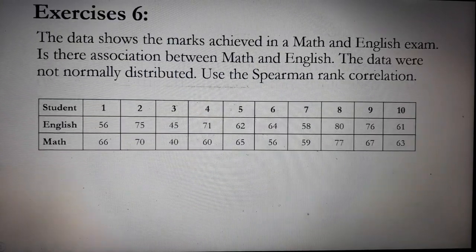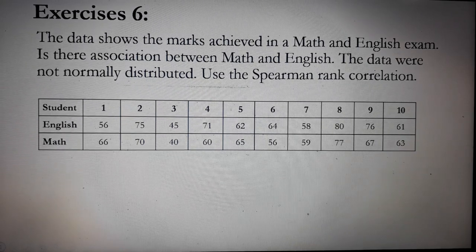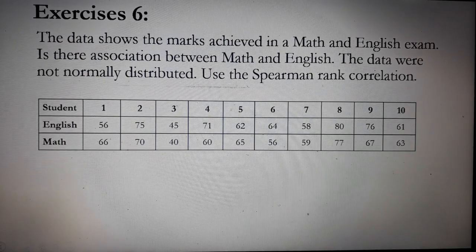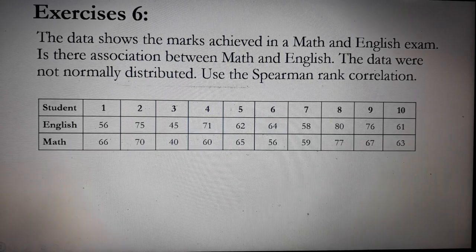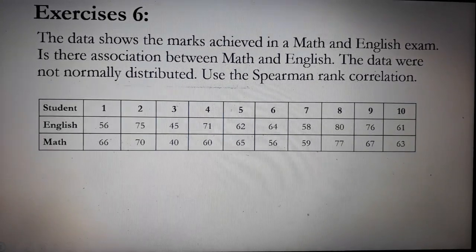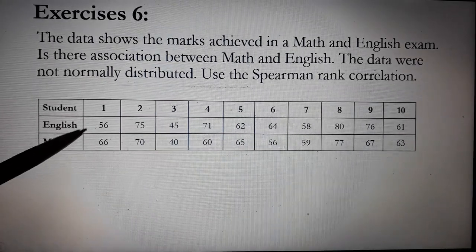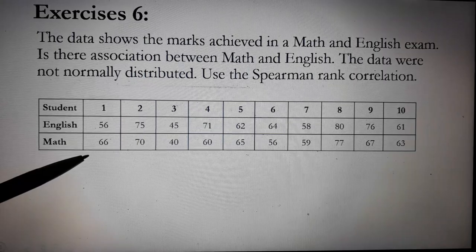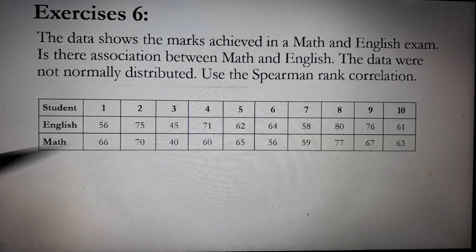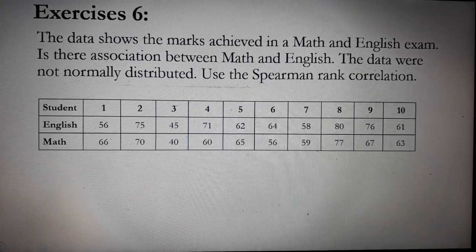Let's apply the concept. Let's have the last exercises. The data shows the marks achieved in a math and English exam. Is there association between math and English? The data were not normally distributed. So you can use the Spearman Rank Correlation. Now as you can see in the data, we have 10 students. And the first student got 56 in English and 66 in math. The second student got 75 in English and 70 in math. And so on.